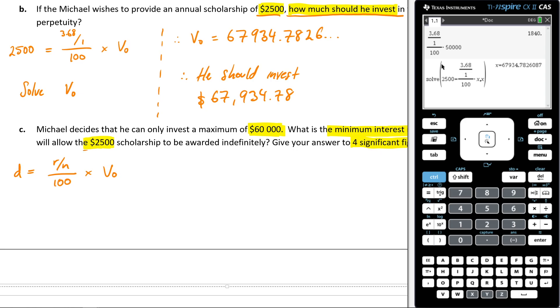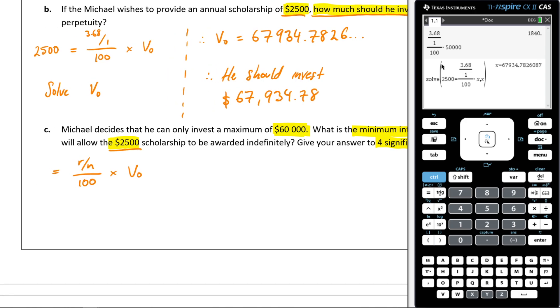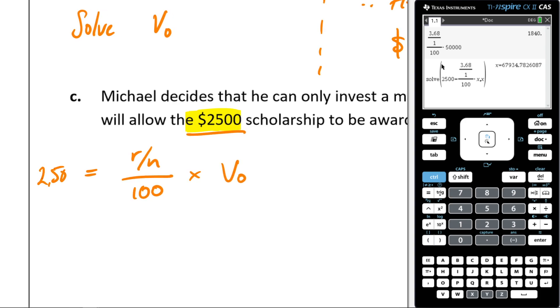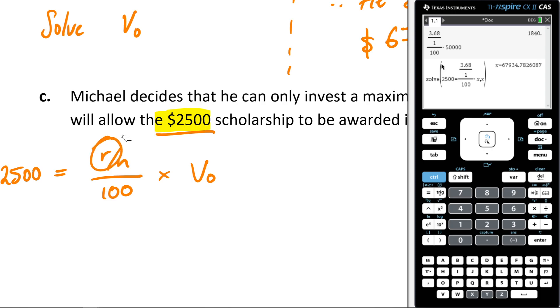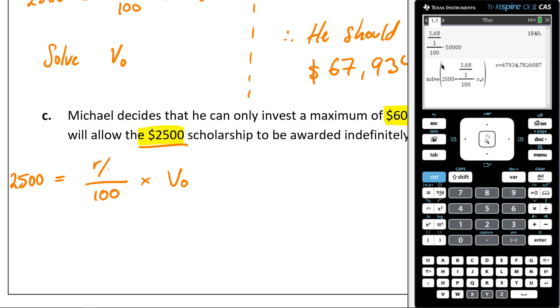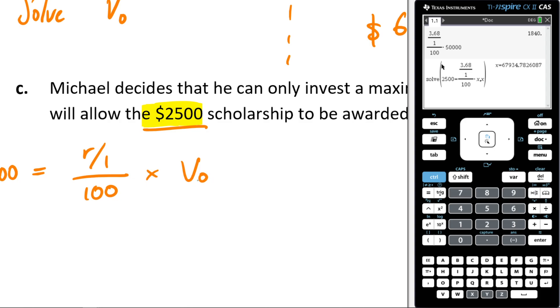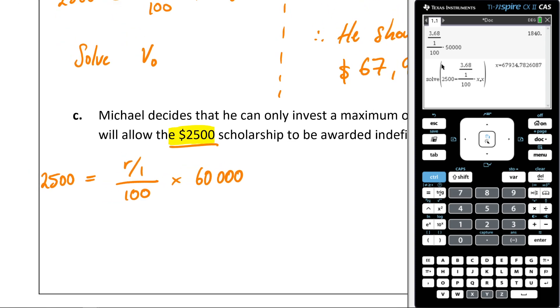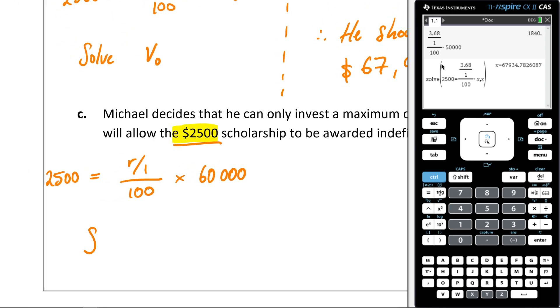What do we know? We know we want this thing to pay out at $2,500, so that's our little D there. So let's pop that in. So it's going to be $2,500. I don't know what R is. That's the thing I don't know. We're trying to figure out what the new interest rate is going to be in order to get $2,500 out. I know what N is, N is 1. And I know that we can invest a maximum of 60K, so that means this V₀ is going to be $60,000. So now with this, I can now solve for R. So now I'm trying to solve for R.